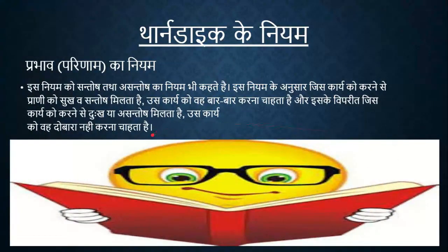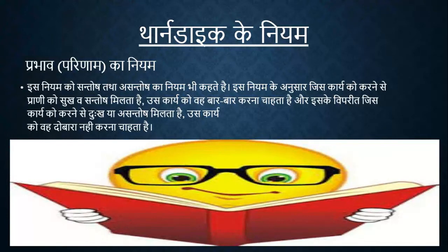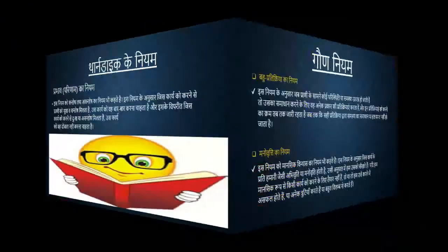Next, we will talk about Thondike's third law — Pradaw, also called Prabhav (Law of Effect). Pradaw means coolness or satisfaction. When a person does a task with joy and satisfaction, they want to do it again. But if someone does not enjoy a task, they try to avoid it. For example, if a child does not feel like reading, he tries to avoid it; but if told to play, he is ready immediately. So the Law of Effect states that satisfaction encourages repetition.